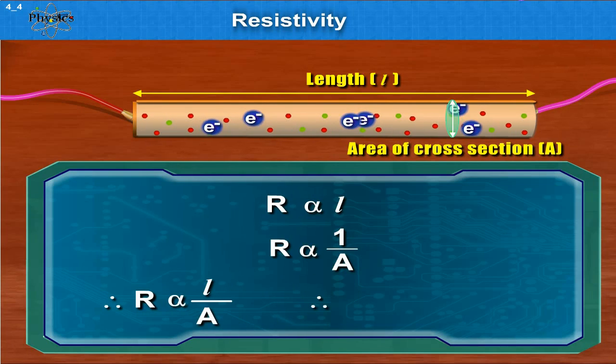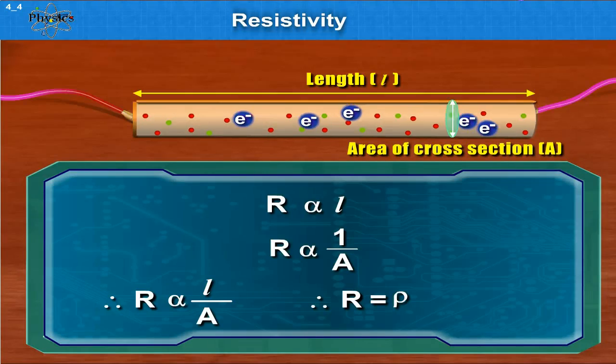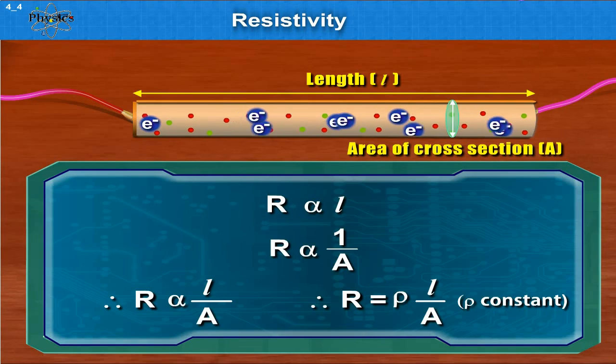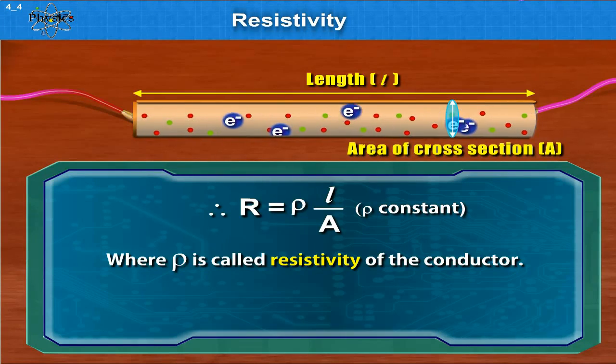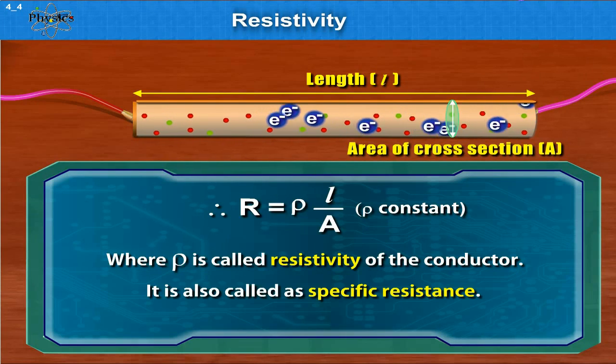Therefore, R is equal to rho L upon A, where rho is constant. Rho is called resistivity of the conductor. It is also called specific resistance.